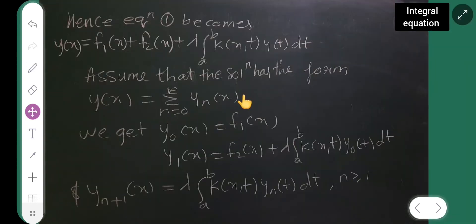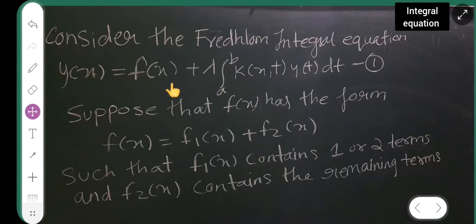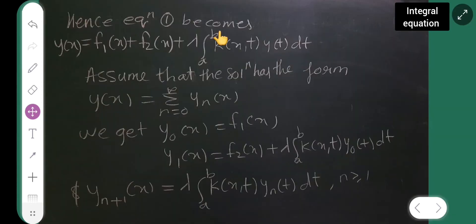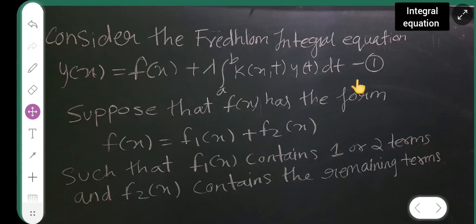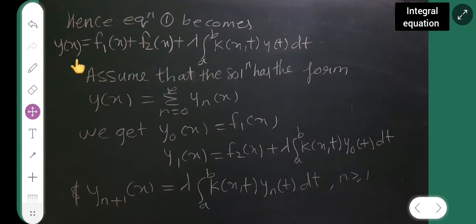Hence, equation 1 becomes Y of X is equal to, now instead of this F of X, I will put F1 of X plus F2 of X. So, Y of X is equal to F1 of X plus F2 of X plus Lambda integral from A to B, K of X, T, Y of T, DT.